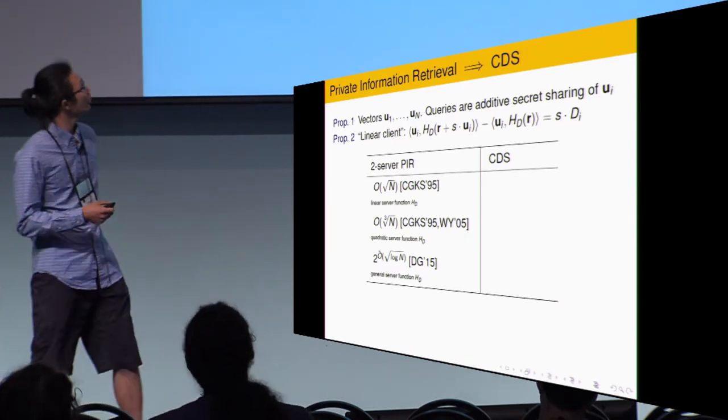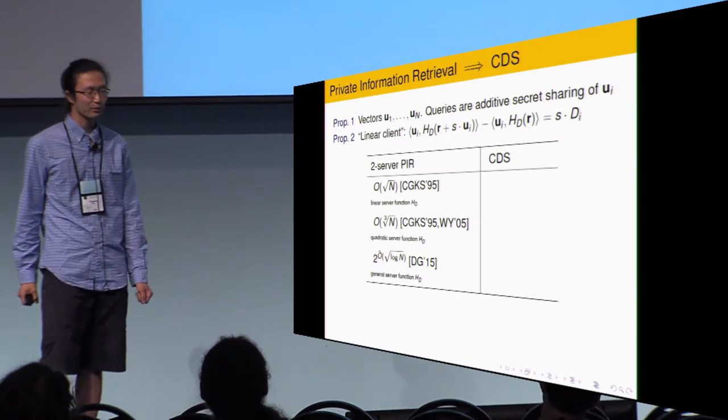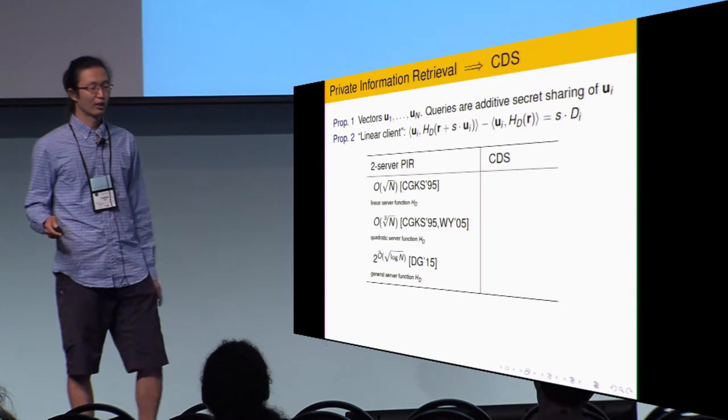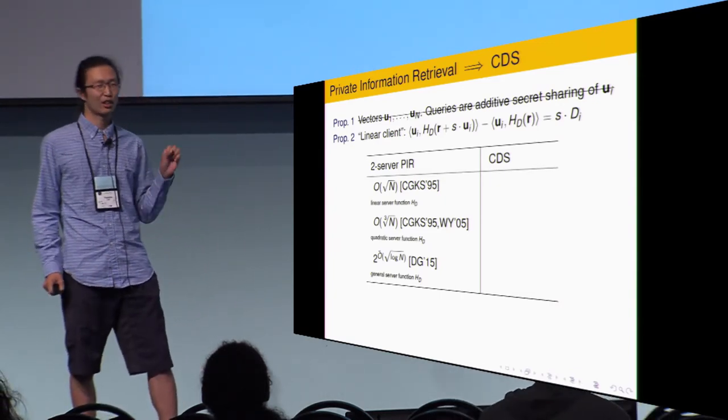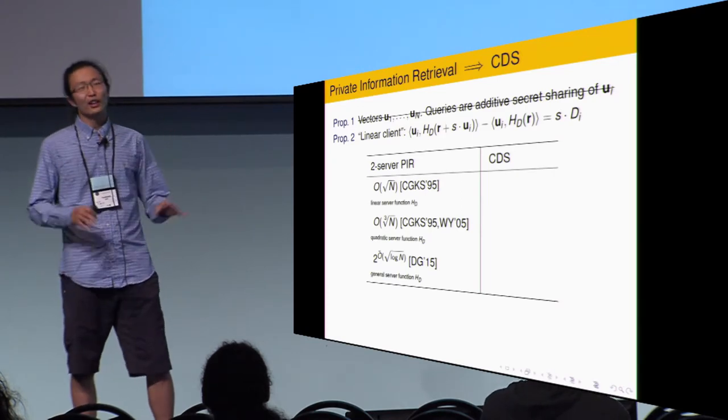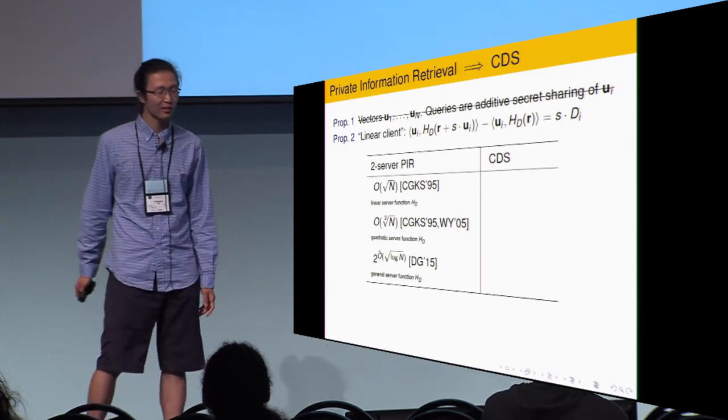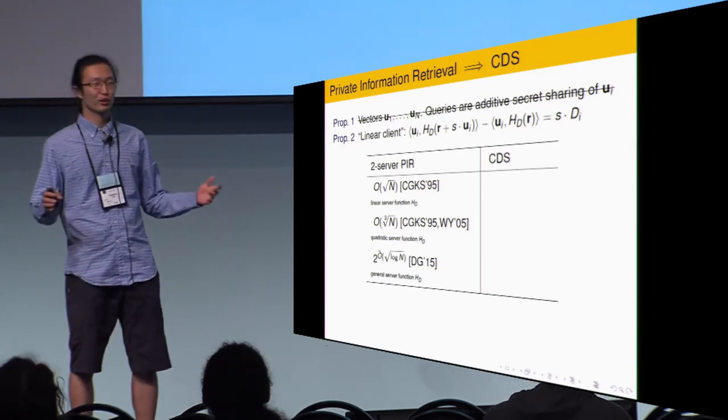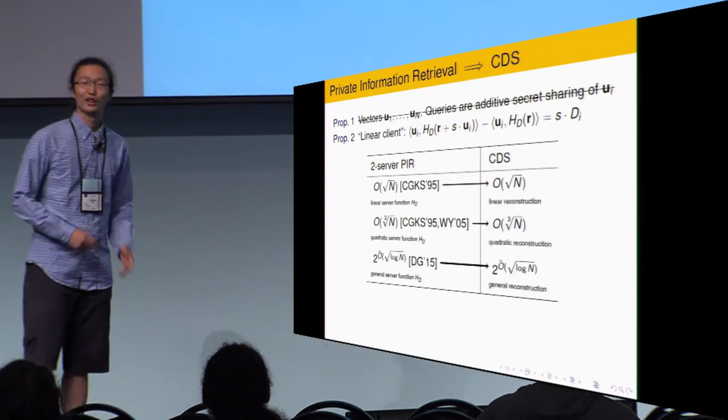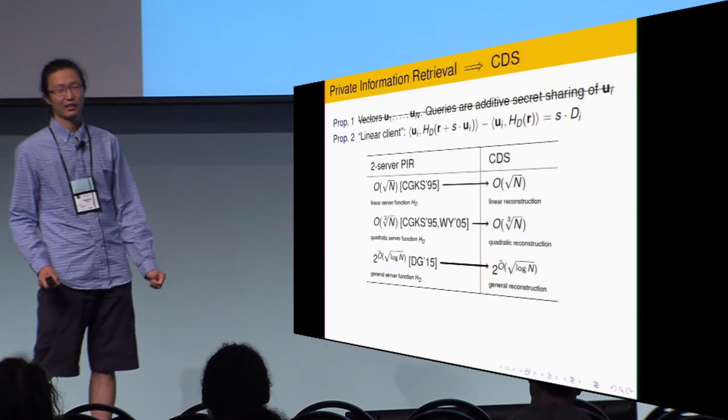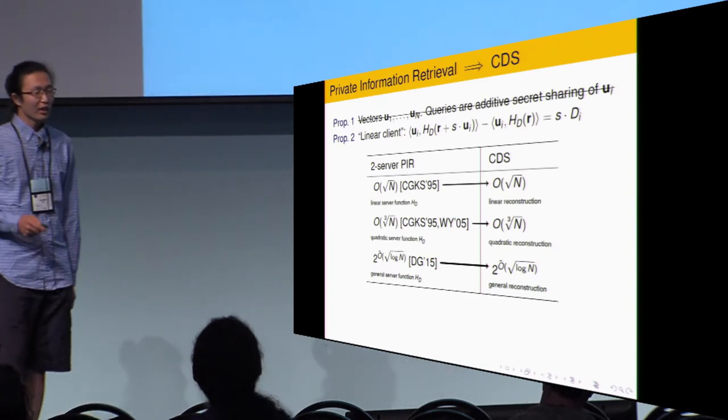But in this transformation, we assume two properties, which is listed in the top of the slides. I want to make some comment here. The first one, we actually don't need the first property. Without this property, the transformation would look ugly, but it still survives. The second thing, known cube root PIR to server PIR, they satisfy both property in the top. Therefore, they can be transferred to CDS with same communication complexity.